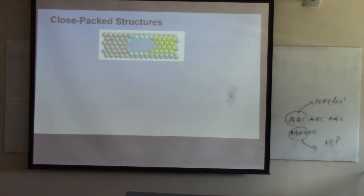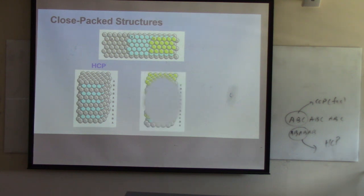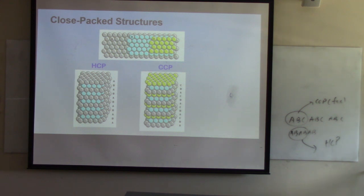Here is a summary slide — probably the most important one — that shows how all the structures relate. Starting from simple cubic, if you add two-atom bases you get cesium chloride; if the two atoms are the same element you get BCC. From FCC, adding two interpenetrating lattices gives sodium chloride (different elements), or diamond (same element), or zinc blende (different elements).